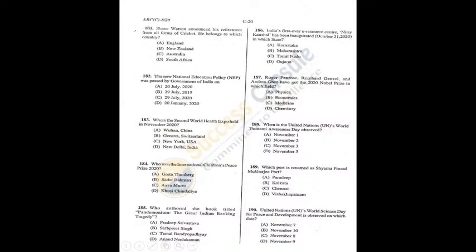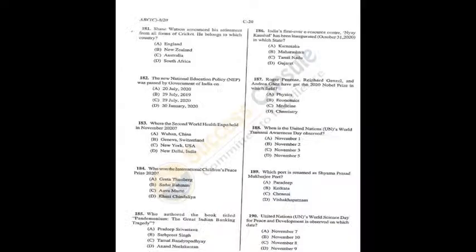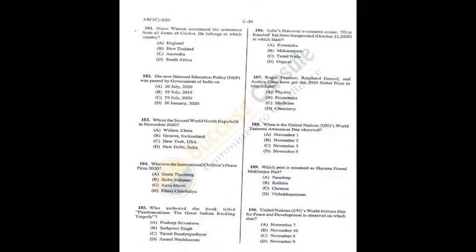Question 181: Shane Watson is a cricketer from Australia — C is the correct answer. Question 182: The New National Education Policy was passed by the government on 29th July 2020 — C is the answer. Q181 = C, Q182 = C.